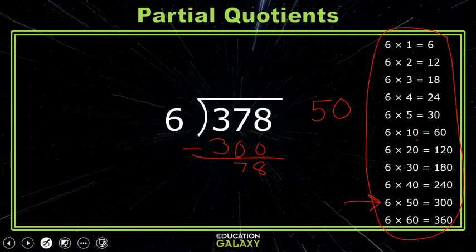Next, I know that 6 times 10 is 60, so I can write the 10 over here, and then subtract 78 minus 60. That gives me 18.